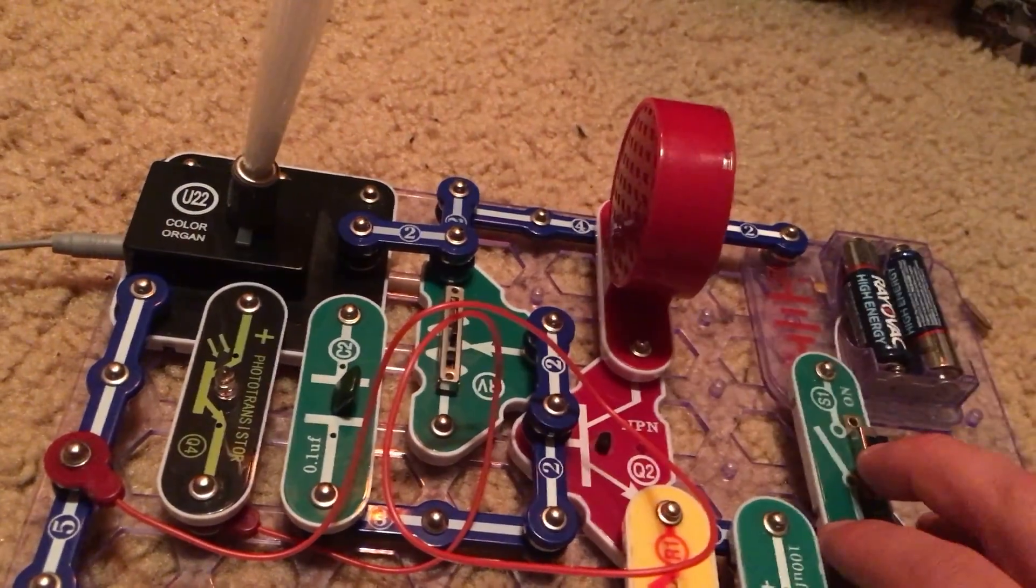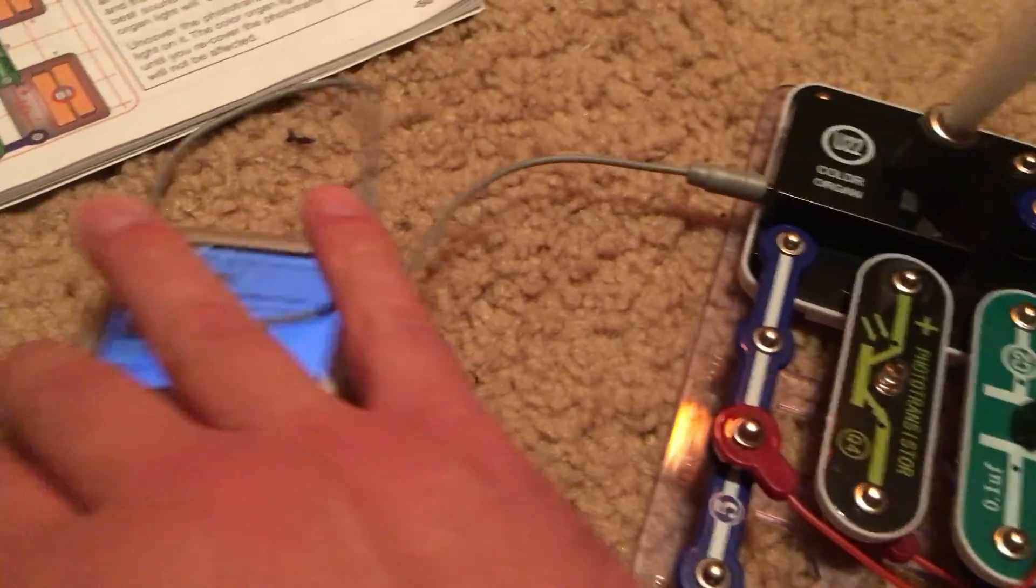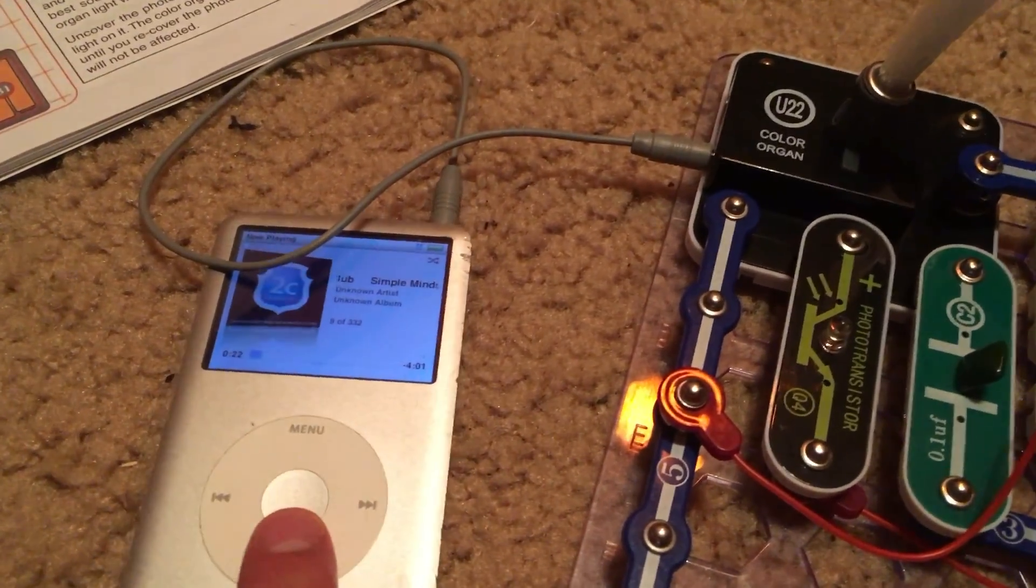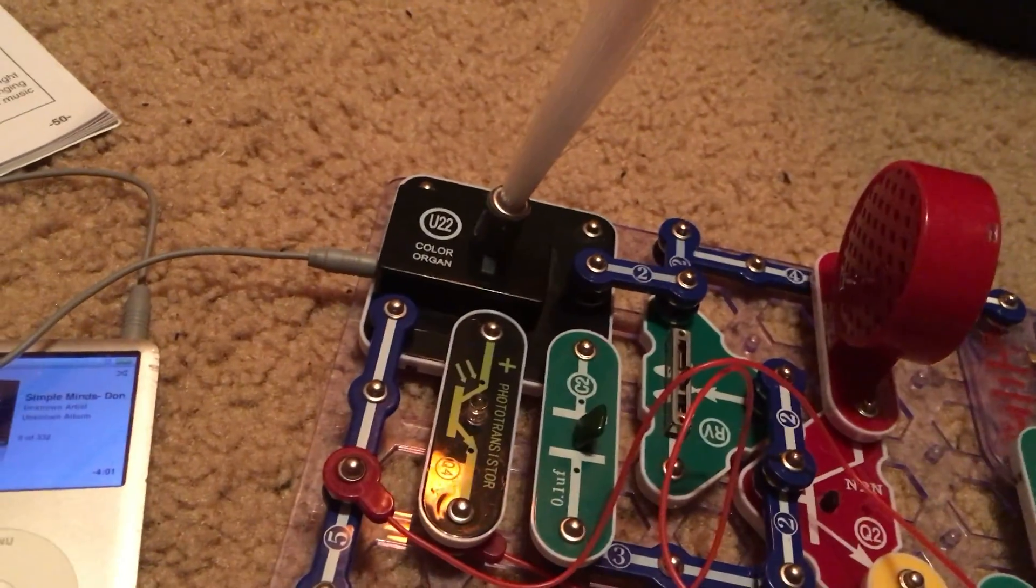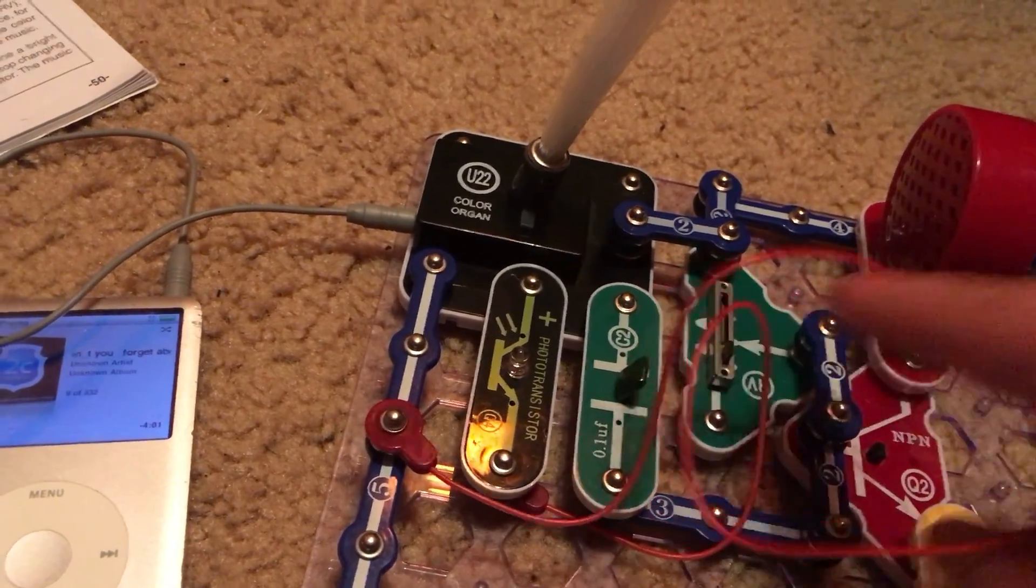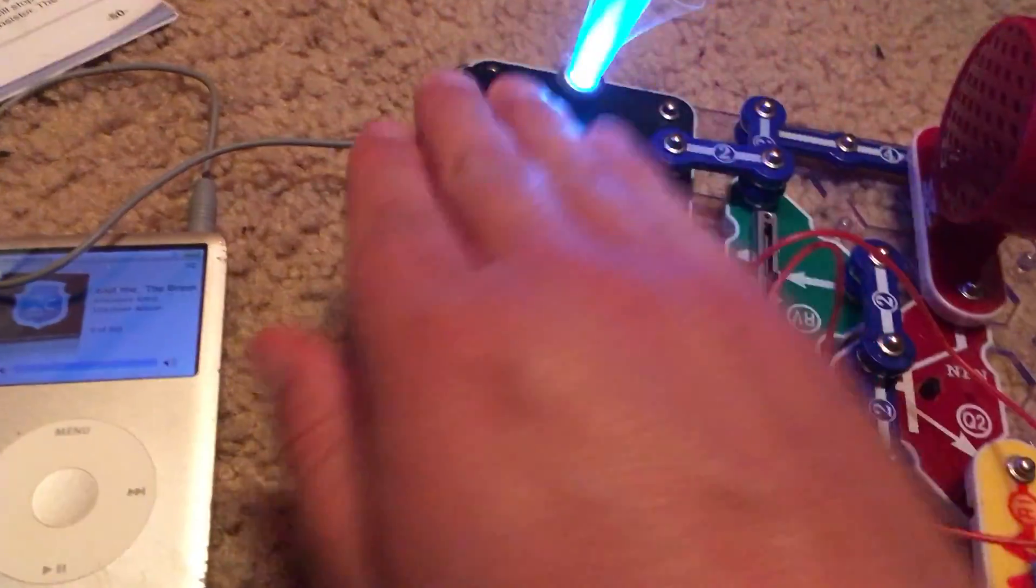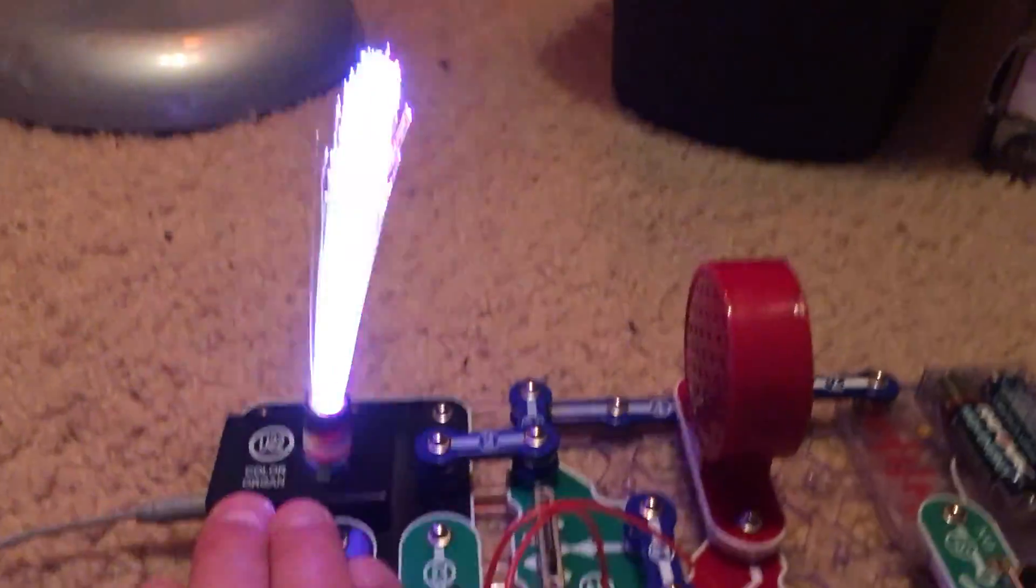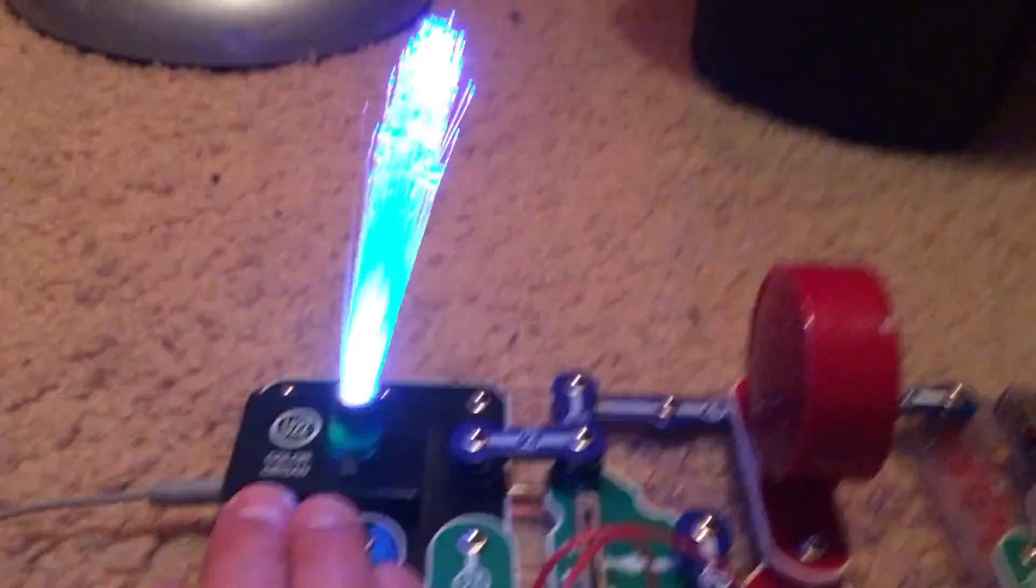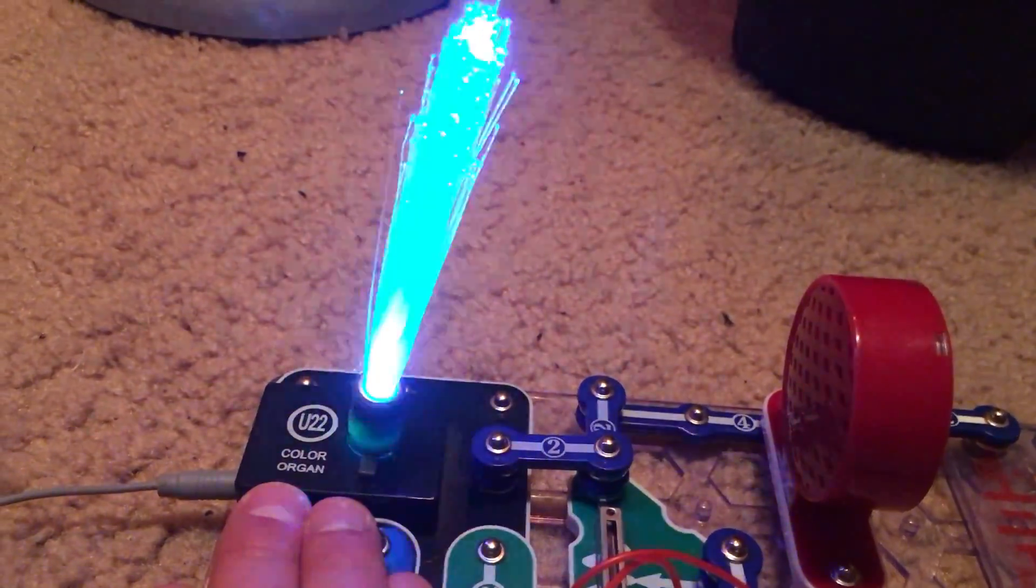And so, I'm going to turn on the slide switch and play music on my iPod. As soon as I push the play button, I'm going to cover the phototransistor. I'm going to have the volume up all the way, so you can hear it. And you can see how the LED on the color organ is changing colors due to the music.